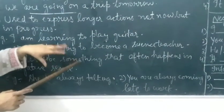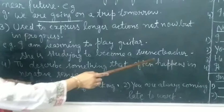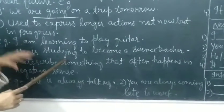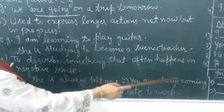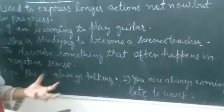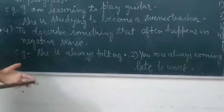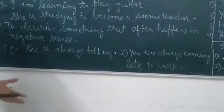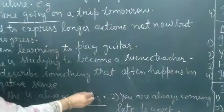Iska meaning ye hai, ke abhi mujhe guitar bajana nahi aati. Abhi mein seekh rahi hun. Same way, she is studying to become a science teacher. Abhi wo science teacher nahi hai. She is studying, wo abhi study kar rahi hai. Science teacher banne ke liye. Then, to describe something that often happens in negative sense. Jab bhi hame kisi ke negative actions ko express karna hai. Means, wo koi hamesha kaam galat hi kare, kabhi sahi na kare. Usko bhi hame most of the times in sentences se represent karte hai. Means, with the help of present continuous tense. For example, we will say, she is always talking. So, here, talking is again, continuous tense. Then, you are always coming late to work.